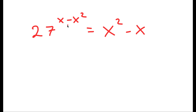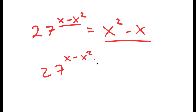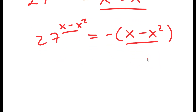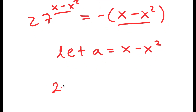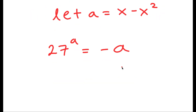Now, what I want to do is make these two expressions the same. To do that, I'm going to rewrite x squared minus x as negative of (x minus x squared). So I have x minus x squared on both sides. Now I'm going to let the variable a equal to x minus x squared. Substituting in, I get 27 to the power of a is equal to negative a.